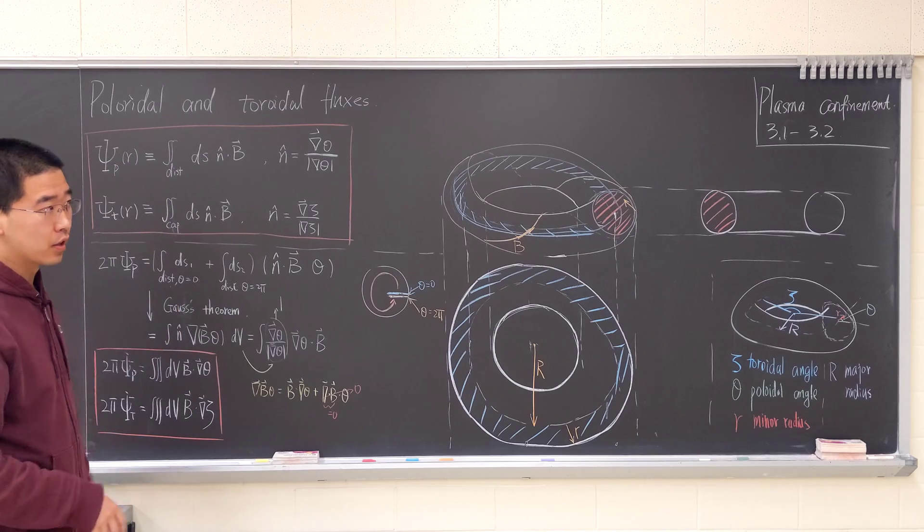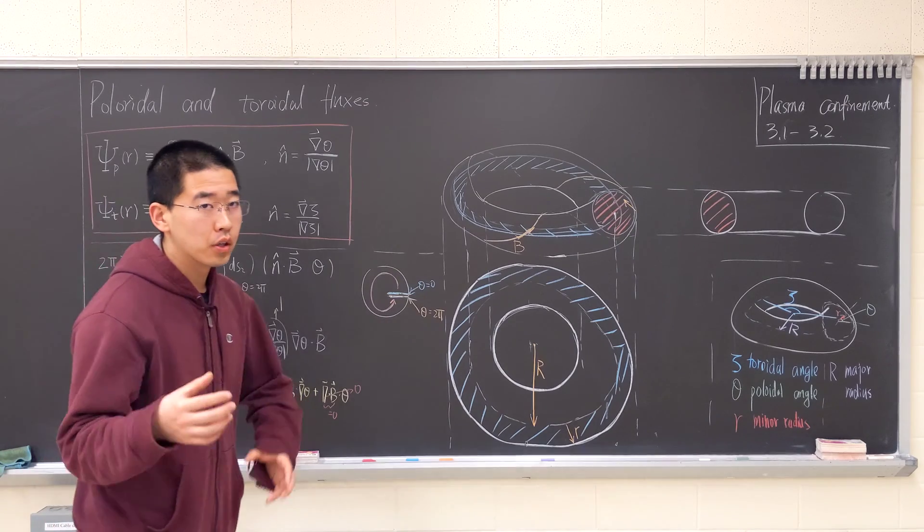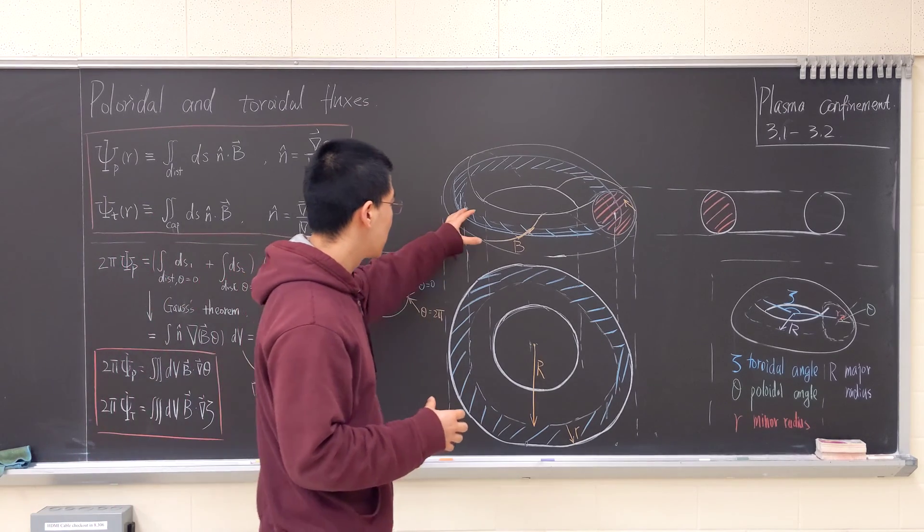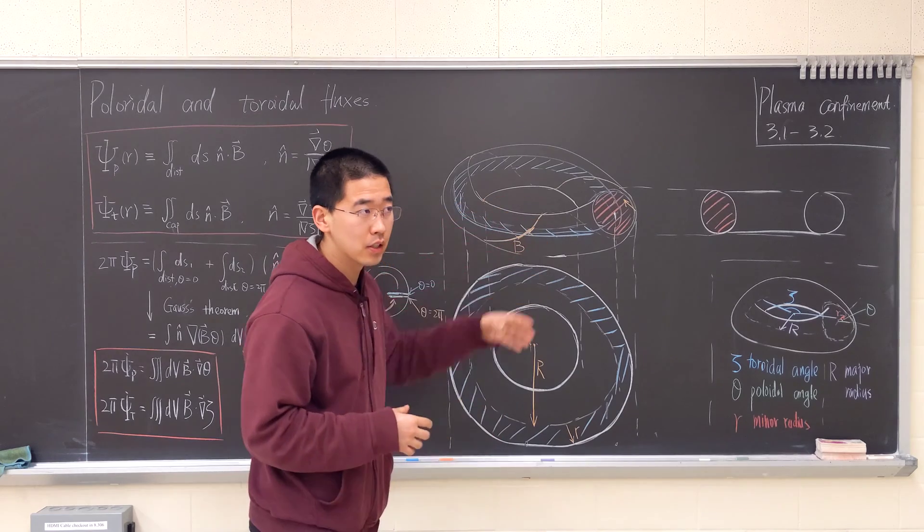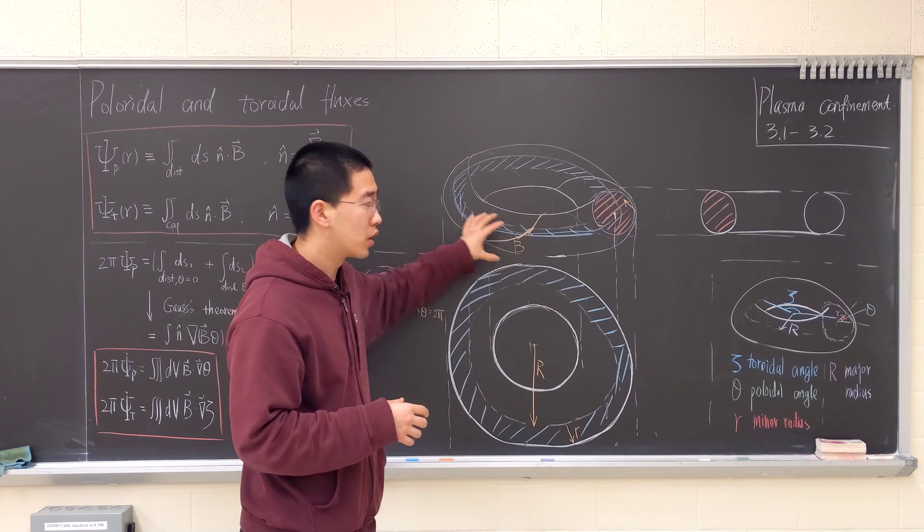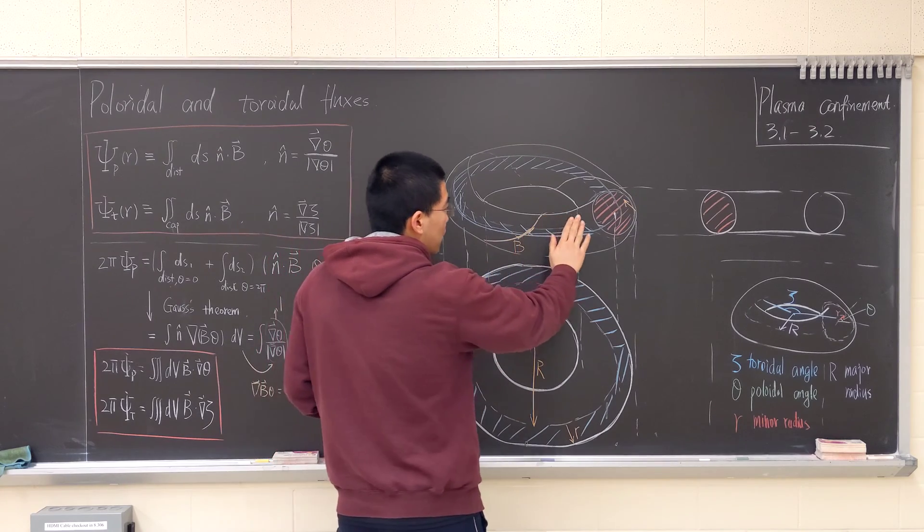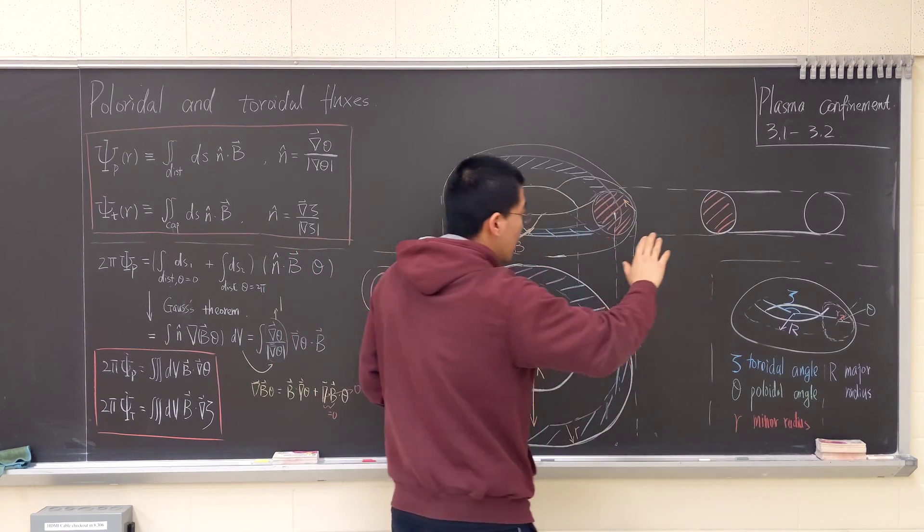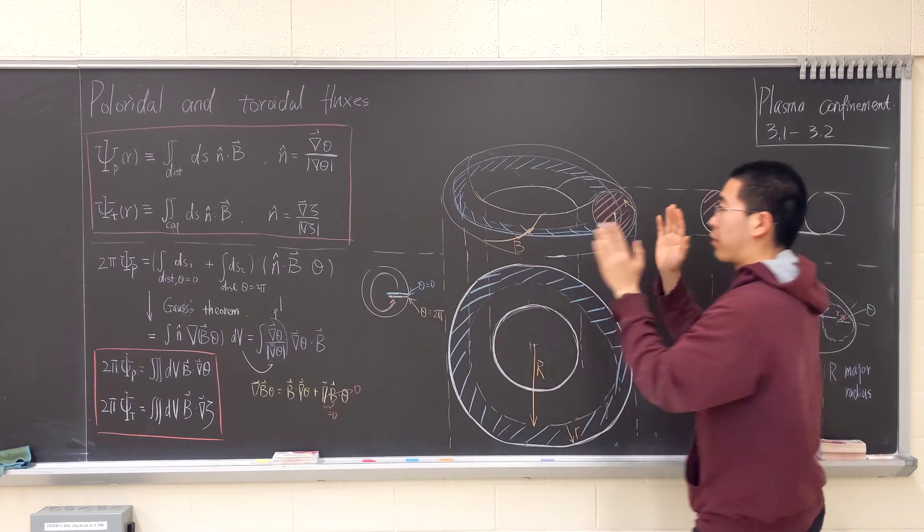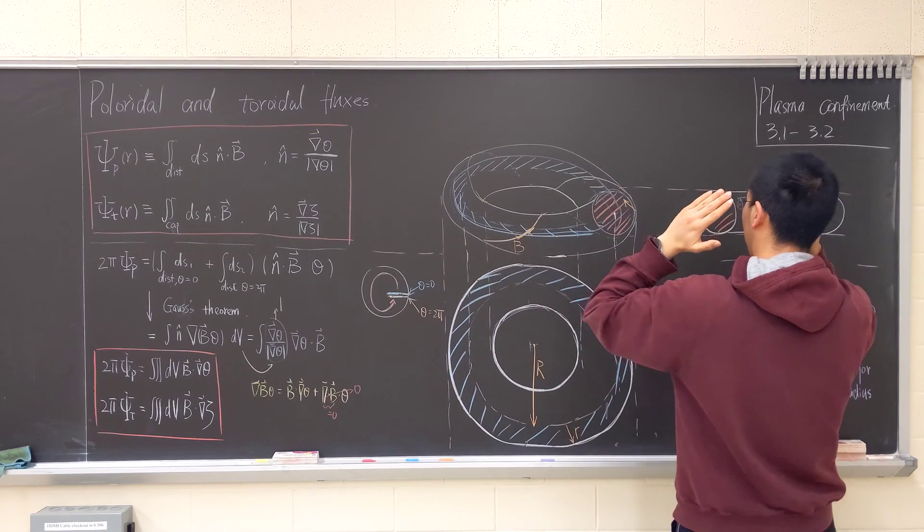It's basically the magnetic flux, but in the toroidal geometry, we can look at it in this way. Okay, so here is a torus.